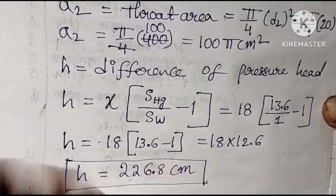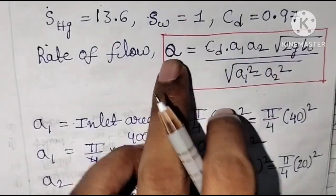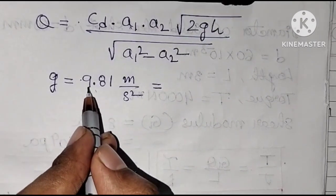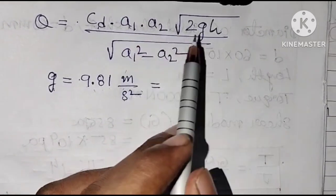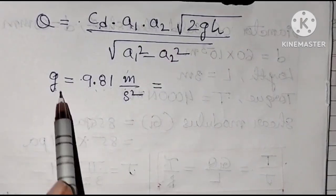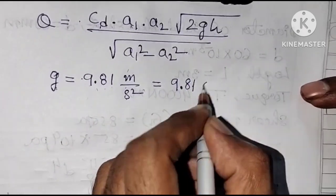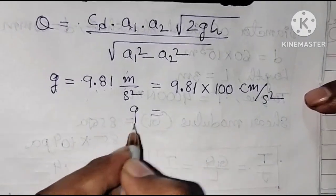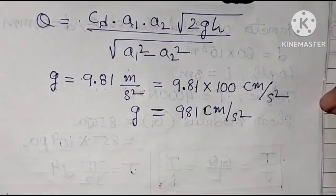Let us substitute all values into the discharge formula. Since areas and pressure head are in centimeters, we convert G: since 1 m/s² = 100 cm/s², G = 9.81 m/s² = 981 cm/s².